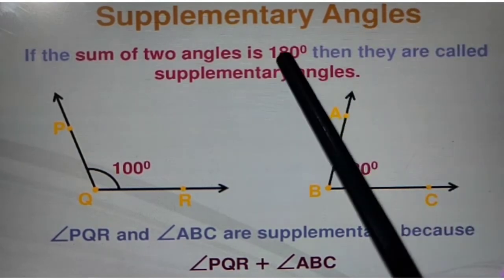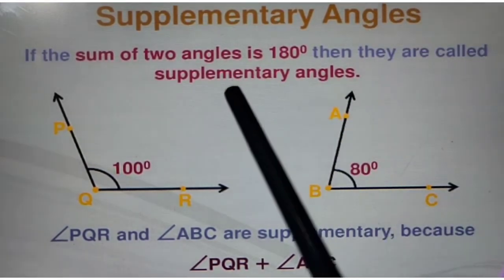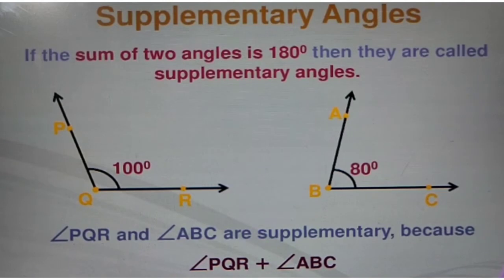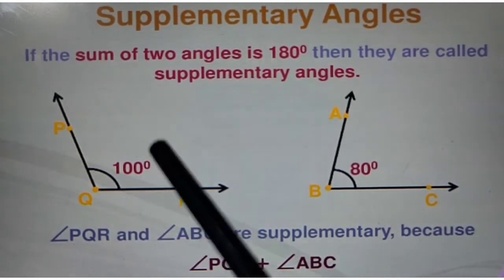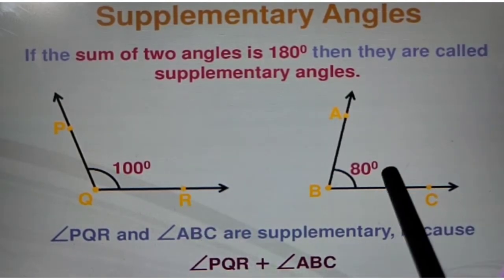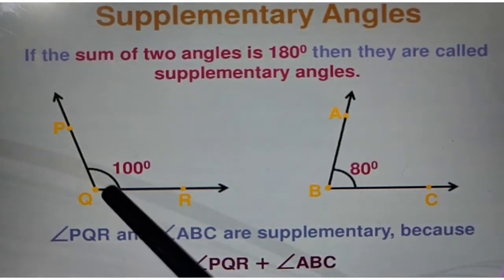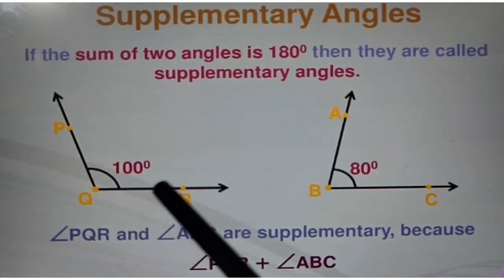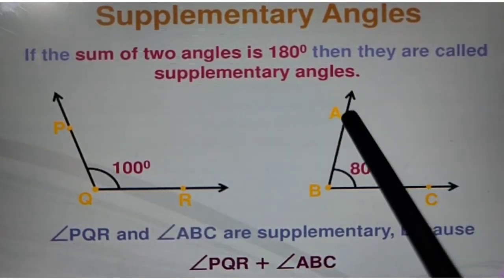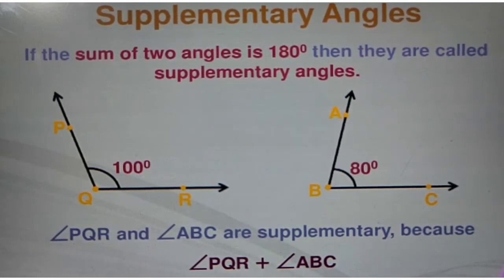If one angle is 100 degrees and the second angle is 80 degrees, their sum is 180 degrees. So angle PQR and angle ABC are called supplementary angles.